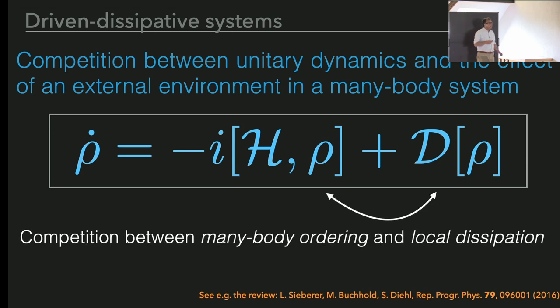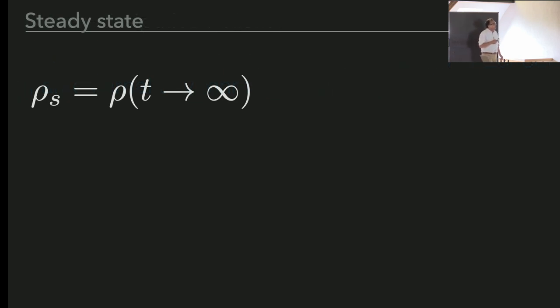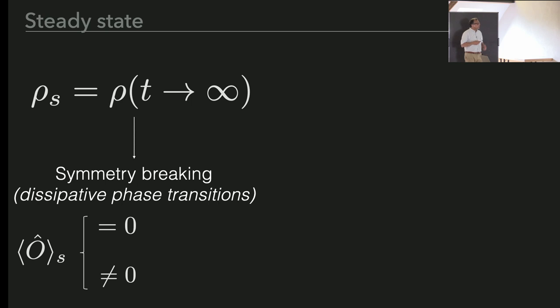All the action takes place because of the competition between the unitary part here and the dissipation. Rho is the density matrix of the system. This competition, in the same way in which quantum phase transitions are driven by the competition between two non-commuting terms in the Hamiltonian, here the competition between this unitary evolution, which will tend to a kind of ordering, and local dissipation will play a similar role.